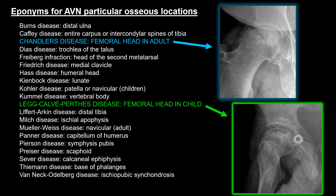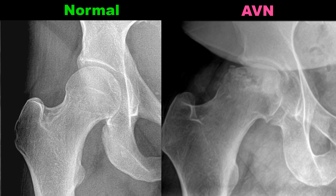There are numerous eponyms for avascular necrosis at particular osseous locations. AVN can affect almost any bone in the body. In the femoral head of an adult, it can be referred to as Chandler's disease, while in a child it is referred to as Legg-Calvé-Perthes disease, which is an idiopathic avascular necrosis of the femoral head in kids.